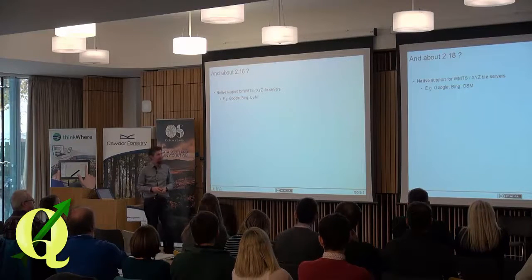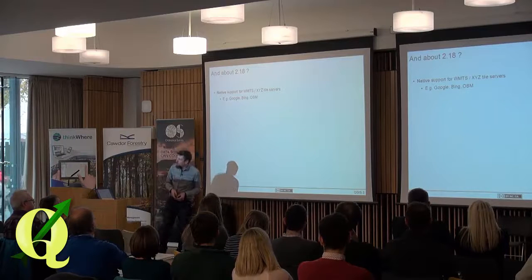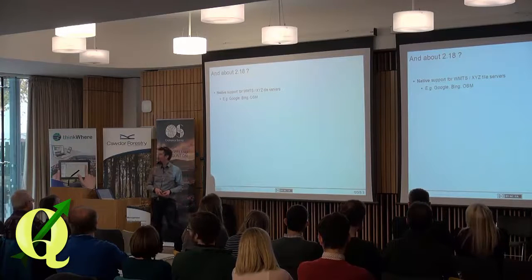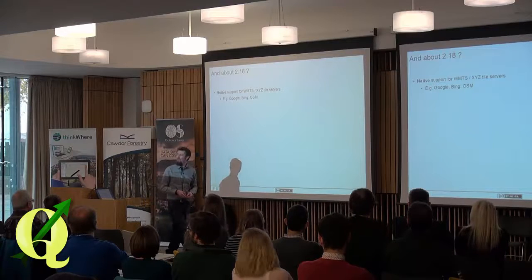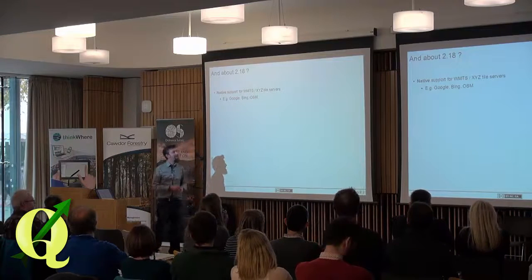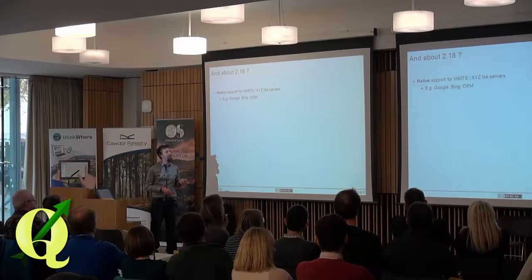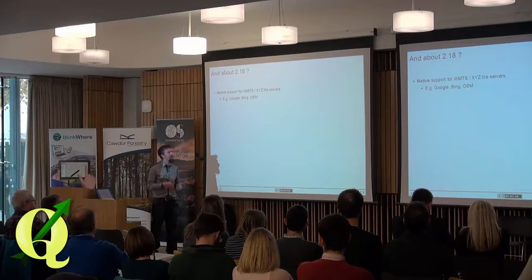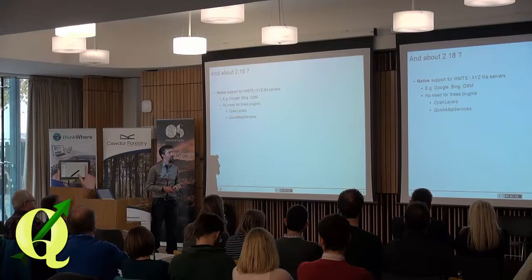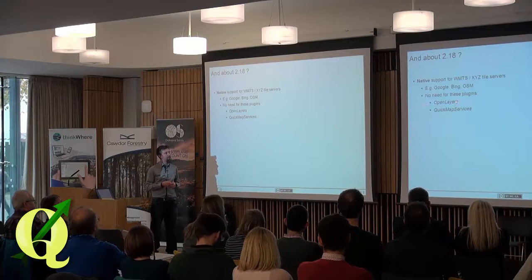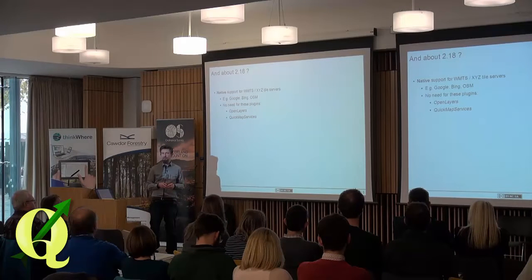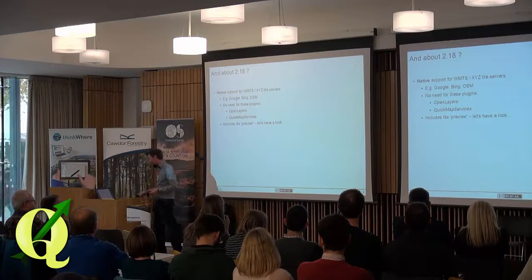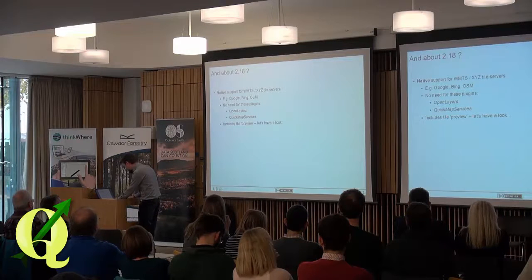What is new in 2.18? Native support for WMTS and XYZ tile servers — for example, Bing mapping, OSM, Google, all of this type of stuff. Previously you've probably used the OpenLayers plugin, or maybe for better performance something like QuickMap Services plugins, to pull this online web mapping through. Now this is supported within QGIS itself, so there's no need for such plugins.